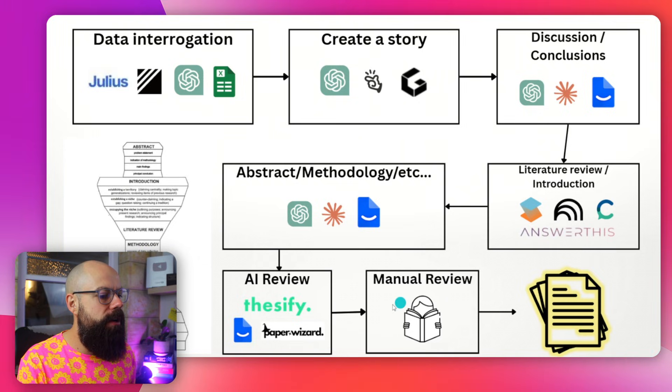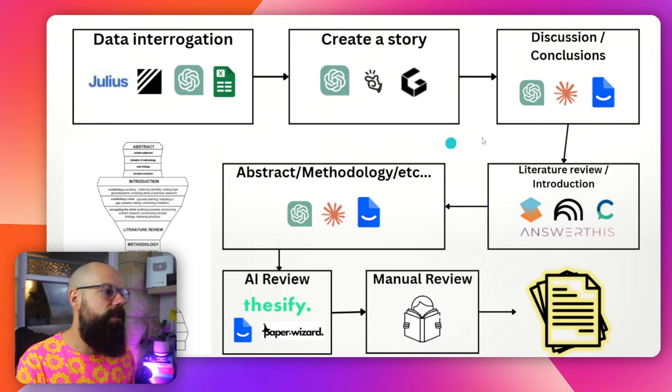Ideally you wouldn't go back to the story stage, because you've got a compelling, submittable piece of work. Then you have the beautiful manuscript, and you put it out for peer review — where the peer reviewers will critique it extensively. It can feel brutal to do all this work and then be told you've done it wrong, but it's part of the process. It's called peer review.